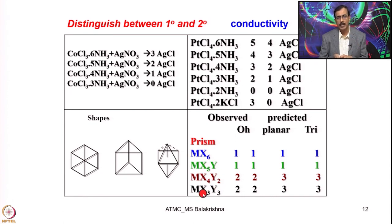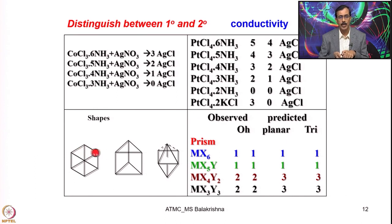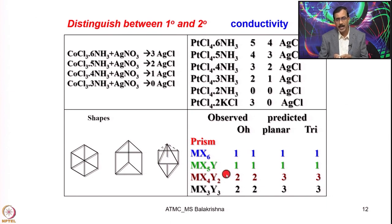Further evidence came when he made a complex with composition MX3Y3 — two types of ligands in a 1:1 ratio. Experimentally he ended up with only 2 isomers. When fitting into hexagonal planar and trigonal prismatic geometries you get 3 isomers each, but with octahedral geometry you end up with only 2 isomers — now known as facial and meridional. Again, when he tried experimentally, he could get only 2 isomers.